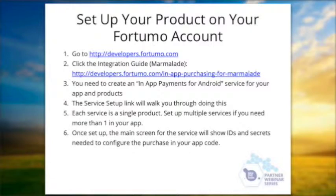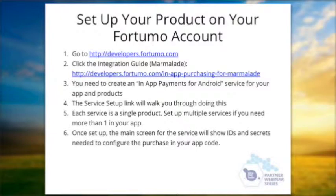Once you're on the Fortumo website, if you click the developer button at the bottom, it's got different guides for different integrations. There's a Marmalade guide that will lead you through everything, including setting up purchases on the website, adding the APIs into your game, and how to respond to requests from the server for receipts. It's all very simple. Each service is a single product — set up multiple services if you need more than one product — and once set up, the main screen will show you all the different IDs and secrets for the app.